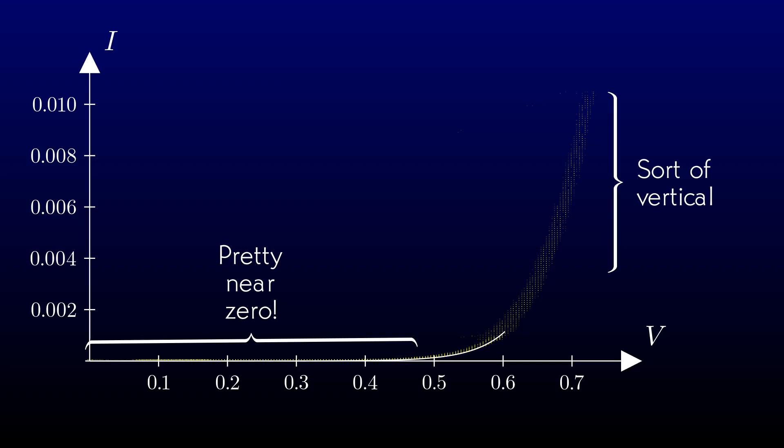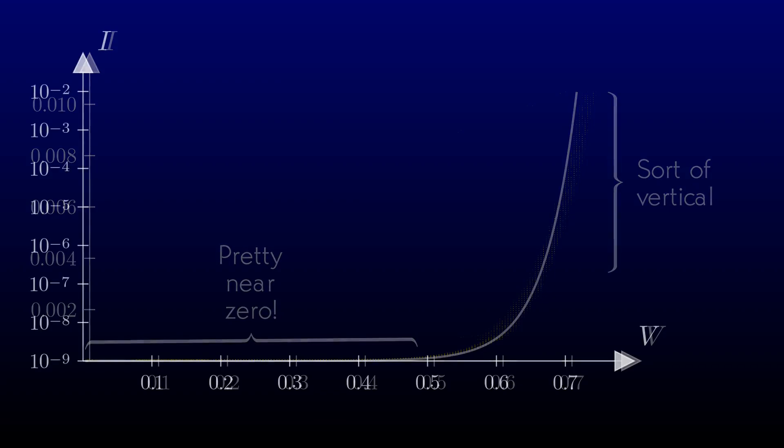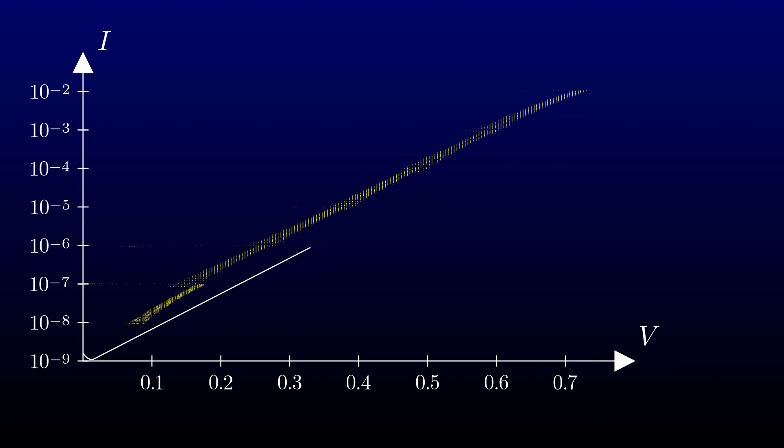The hockey stick shape of the data suggests exponential growth. Let's re-plot our observations on a log scale and see if that guess is right. Let the scope and computer do their thing. And the graph is really close to being a straight line. It appears we were right. Current through a diode goes up exponentially with the forward voltage.